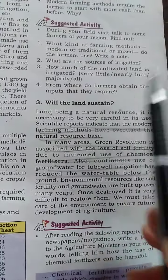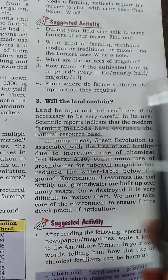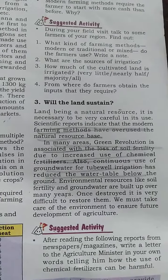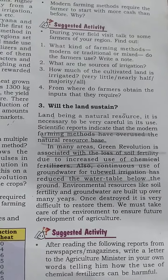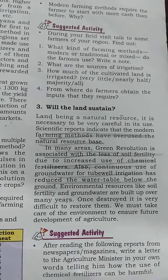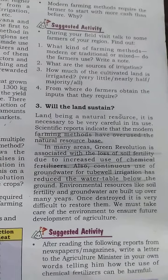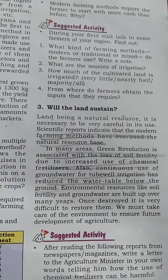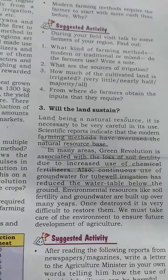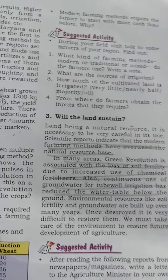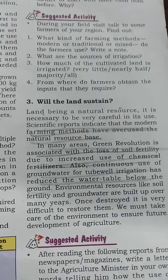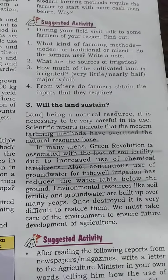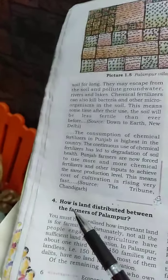The third point was: will the land sustain? Land is a natural resource, and when we use modern farming methods we must take care of the environment to ensure future agricultural development. Modern farming methods reduce land fertility as it should be, so as a natural resource we should take care of it properly.